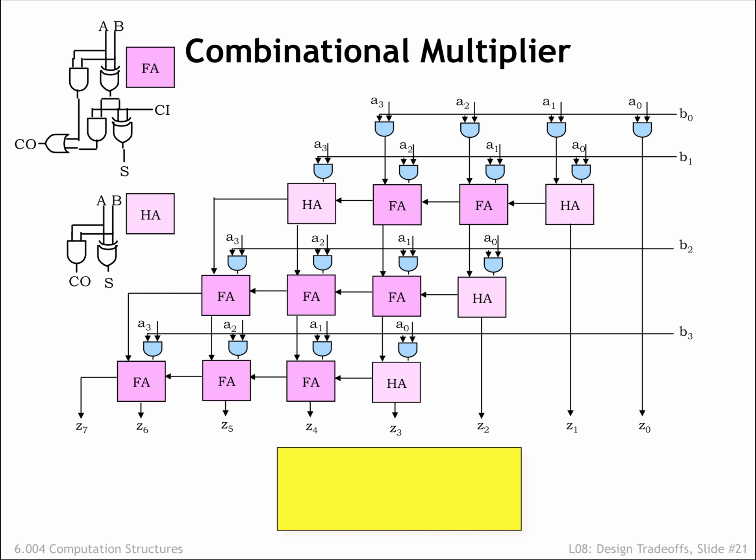The m times n 2-input AND gates compute the bits of the m partial products. The adder modules add the current row's partial product with the sum of the partial products from the earlier rows.